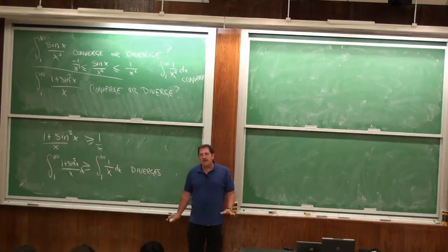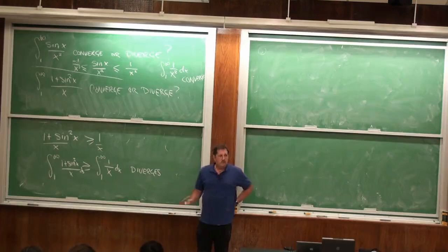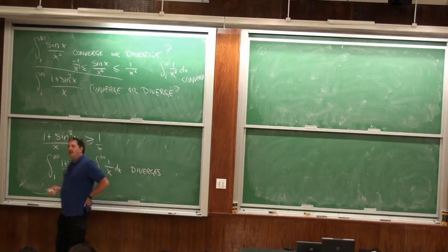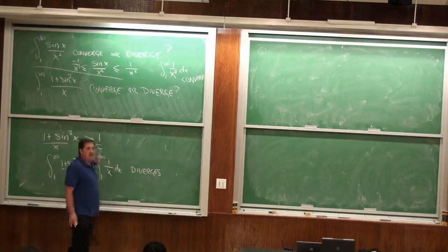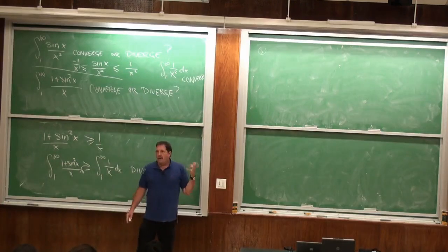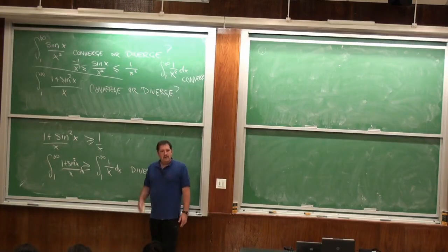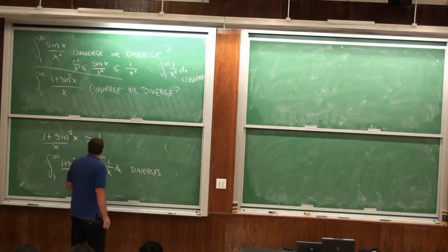The comparison theorem is a little tricky, but it's a good skill to learn — to look at things and compare them to things you know. In general, 1/x^p: if we're going to infinity and the power is bigger than 1, it converges. There's a homework problem that asks about that.